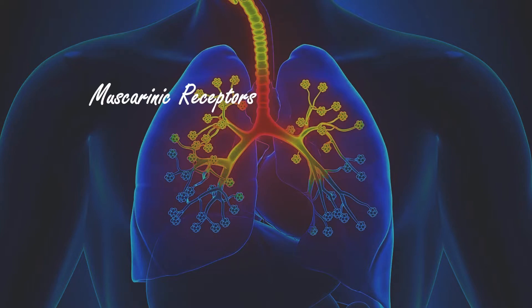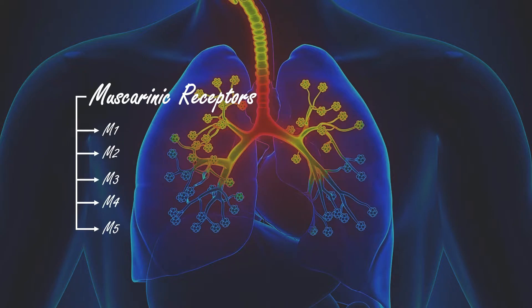There are five different receptors: M1, M2, M3, M4, and M5. The M1, M4, and M5 receptors are in the central nervous system.